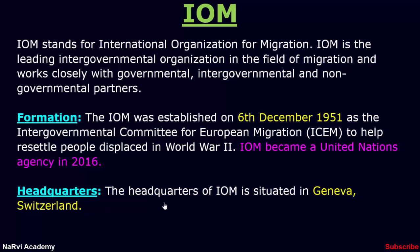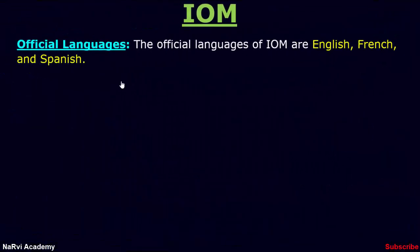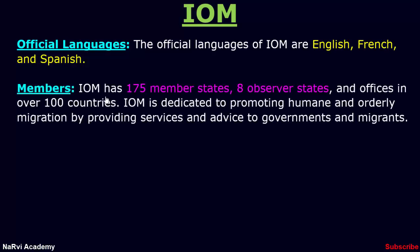The headquarters of the International Organization for Migration is situated in Geneva, Switzerland. The official languages of IOM are English, French, and Spanish.